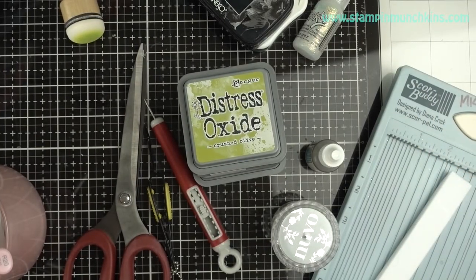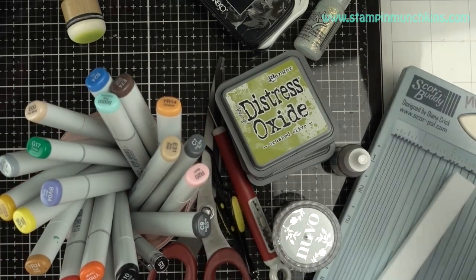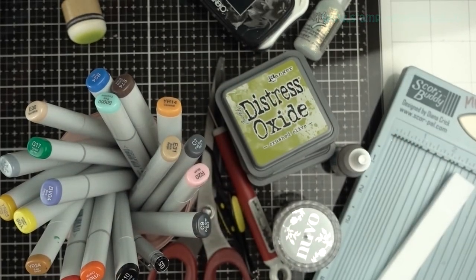Tim Holtz scissors and pick tweezers, mini MISTI and Creative Corner, Score Buddy and Teflon bone folder, guillotine trimmer, and the Copics - everything will be listed below for easy shopping. Oh and my Lawn Fawn glue tube.